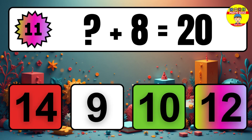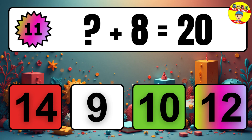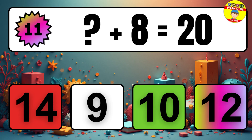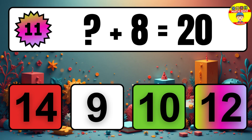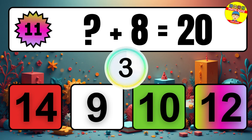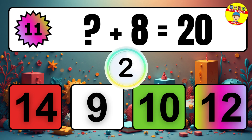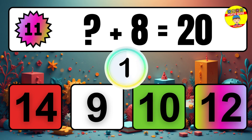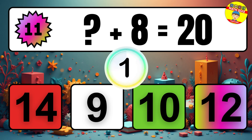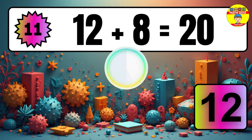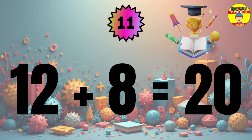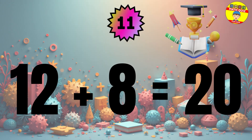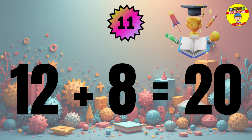Question 11. What number plus 8 equals 20? The missing number is 12.